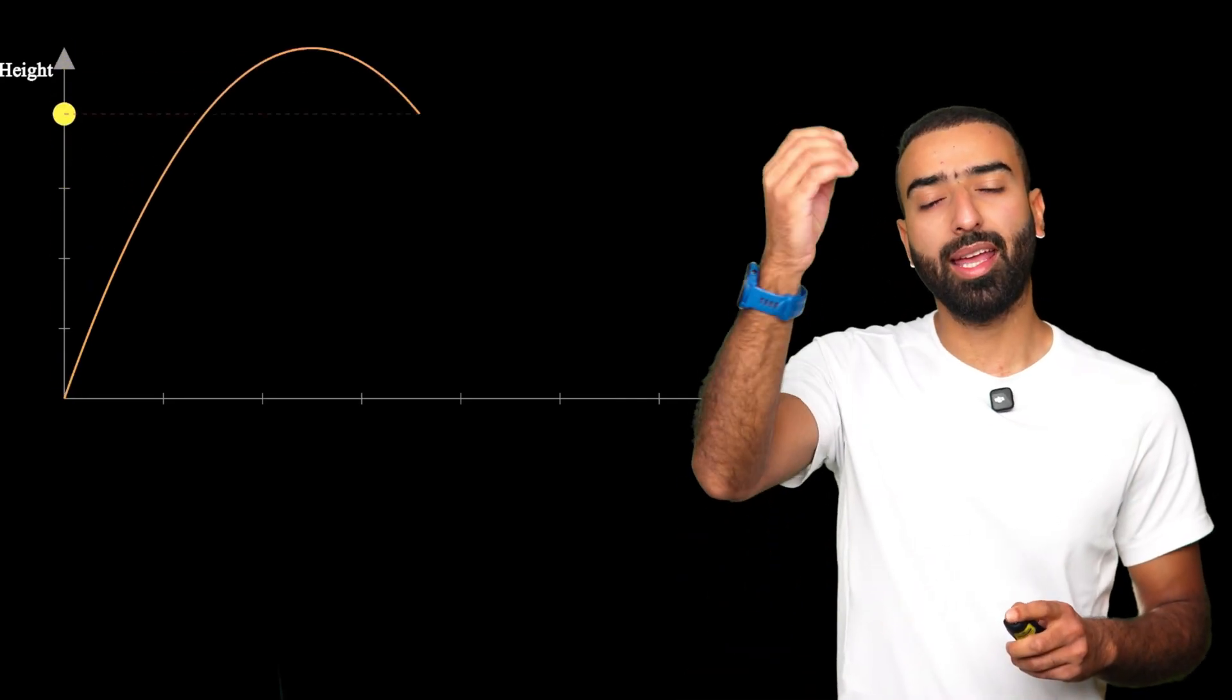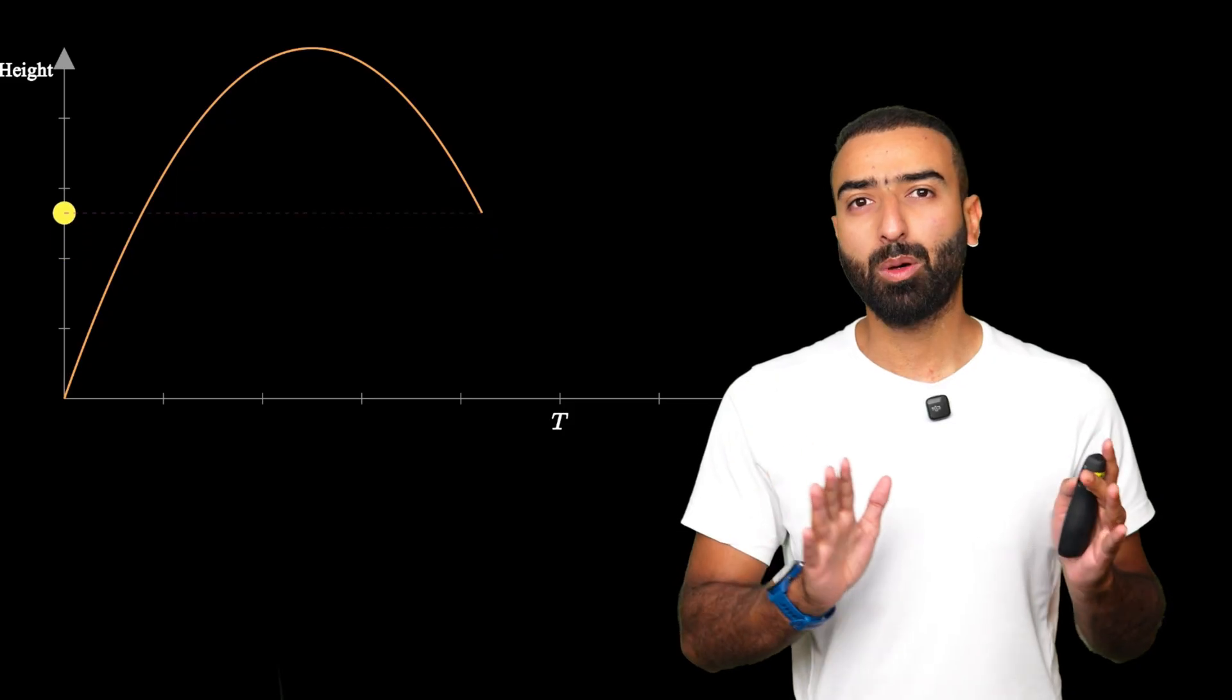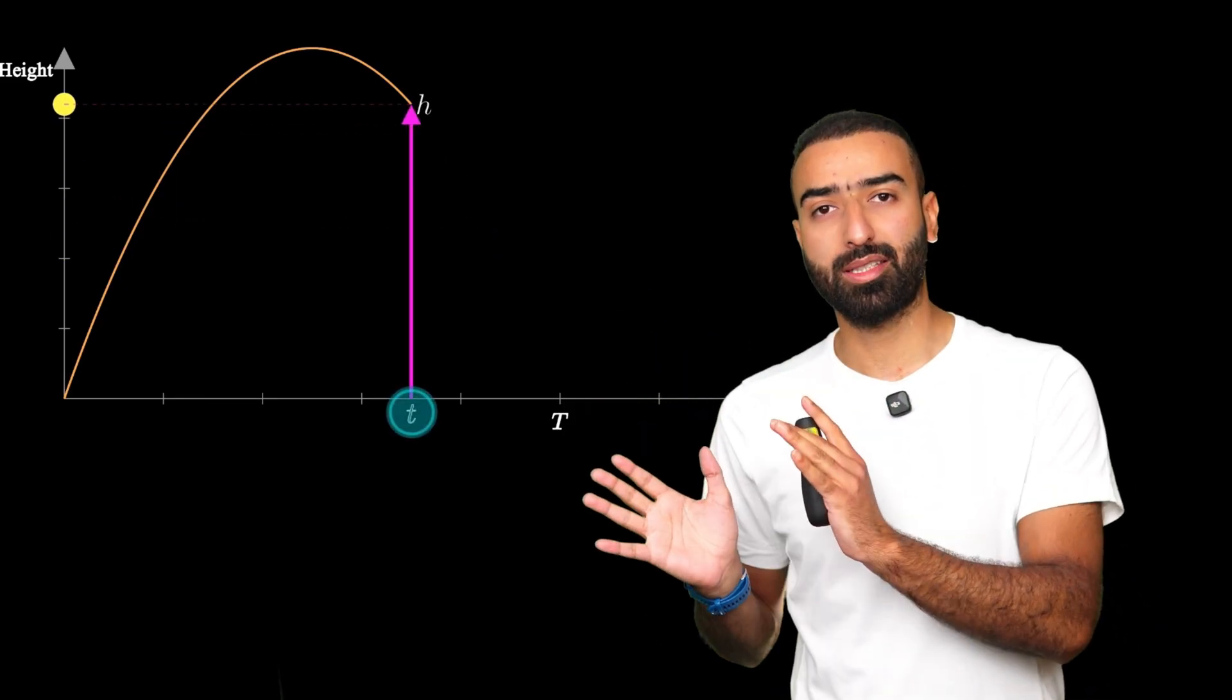You throw a ball straight up and it lands on the ground at time capital T. But what was its height at another time instant, T?